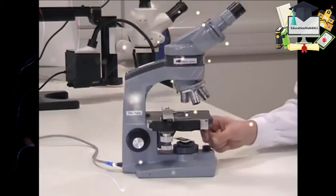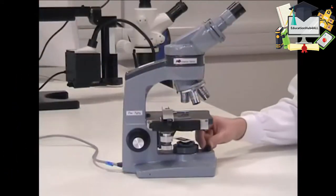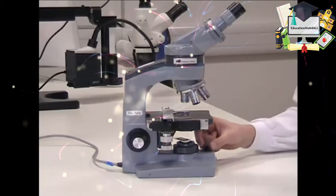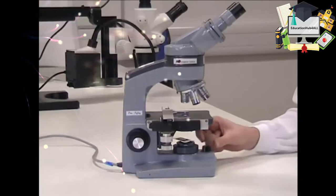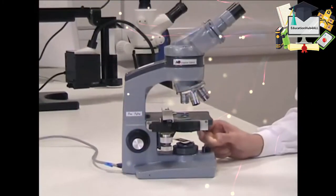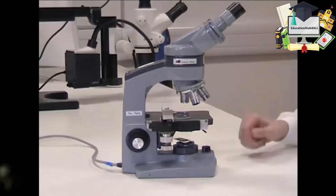The first thing you need to do is turn on the light. This is done with the control at the bottom here. This turns the light on and also, by turning it round, increases the intensity of the light. Avoid turning it right up to its fullest brightness to start off with because it might be very bright when you first look down the eyepieces.